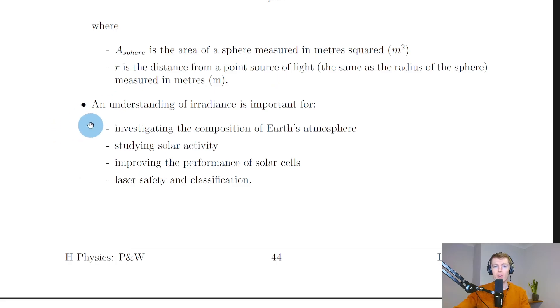Going back to the notes just to finish off, it says here that an understanding of irradiance is important for several things, like investigating the composition of Earth's atmosphere - that's just looking at what Earth's atmosphere is made up of - studying solar activity, and improving the performance of solar cells.